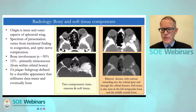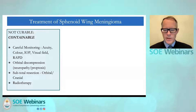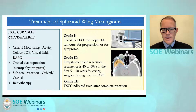The treatment of sphenoid meningioma is challenging. These diseases are not curable but they are containable. We monitor the patient and consider orbital decompression where there is a significant neuropathy or significant proptosis, or subtotal resection with neurosurgical colleagues where there is a significant cranial component. Radiotherapy is indicated for grade 1 tumours where they are inoperable or where there is progression. The indications for grade 2 are less certain, but there is a strong case for radiotherapy, and in grade 3 tumours radiotherapy is indicated even after complete resection.